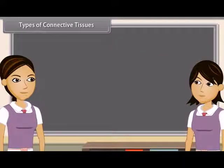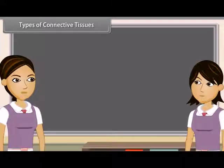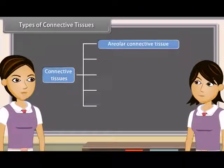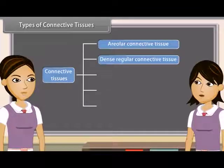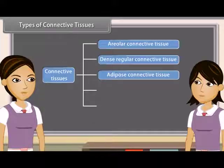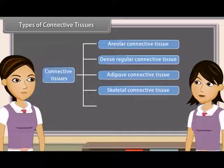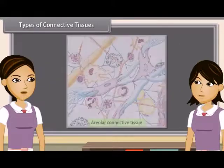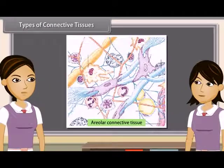Types of connective tissues: In animals, there are mainly five types of connective tissues — Areolar connective tissue, Dense regular connective tissue, Adipose connective tissue, Skeletal connective tissue, and Fluid connective tissue.